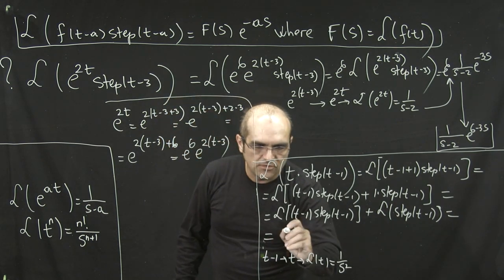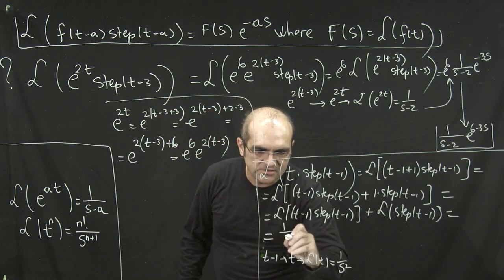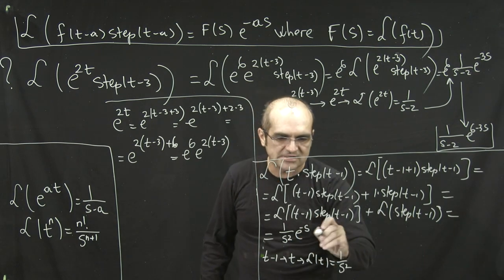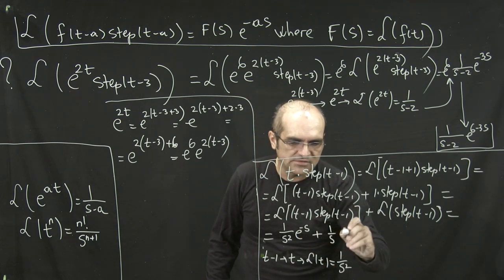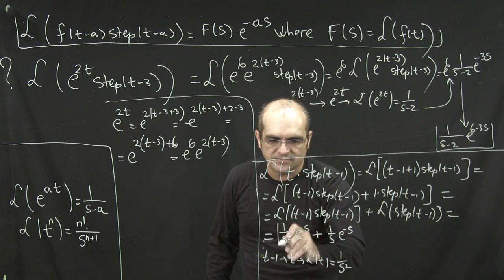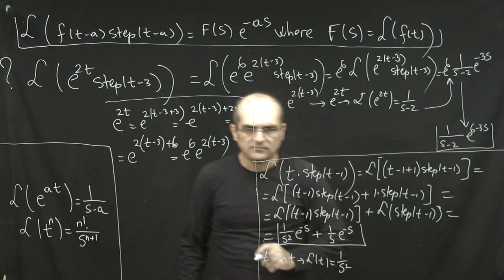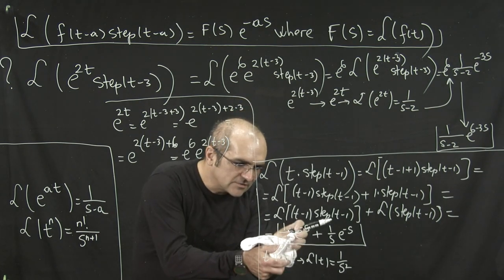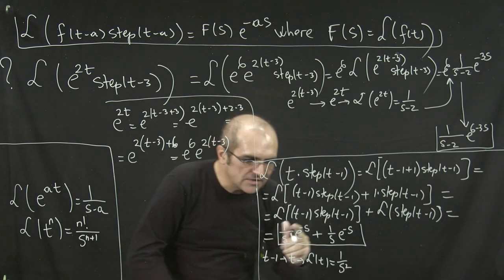So, following up with the delay theorem, this becomes 1 over s squared times e to the minus s, and this is just 1 over s times e to the minus s, the formula for the Laplace of step(t minus a). So this is s squared, let me make it clear here, because it looks like times 2, so s squared.